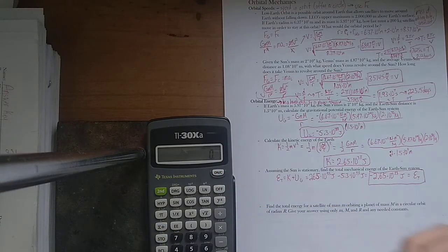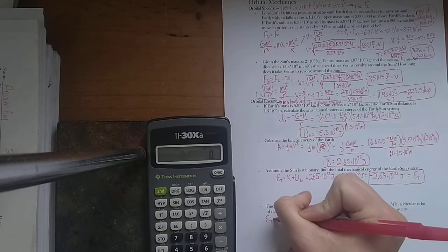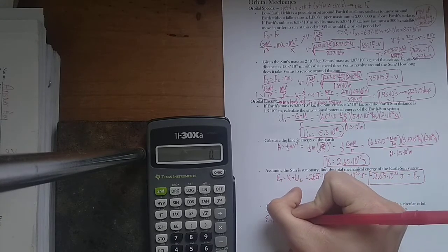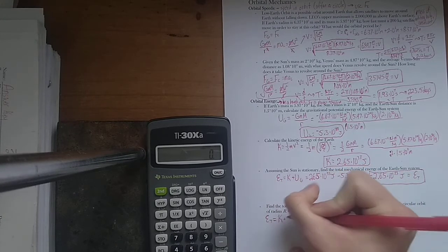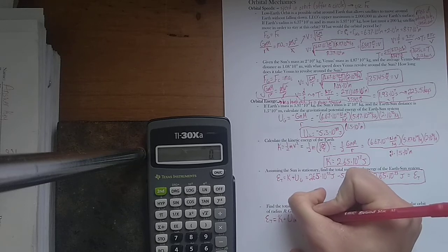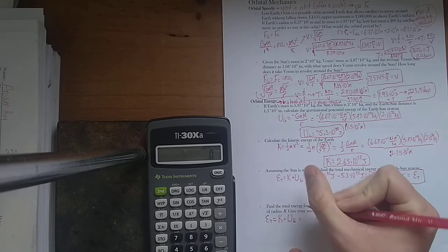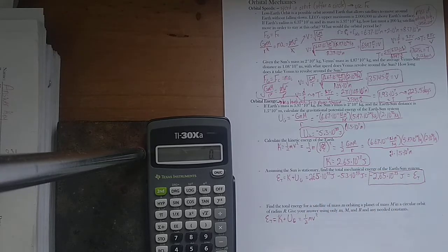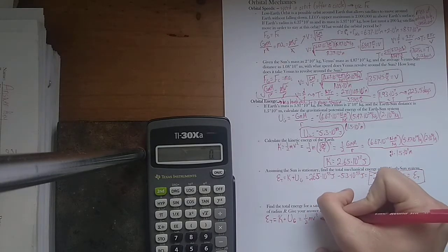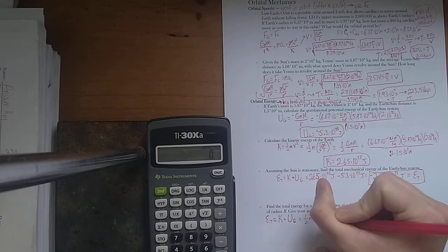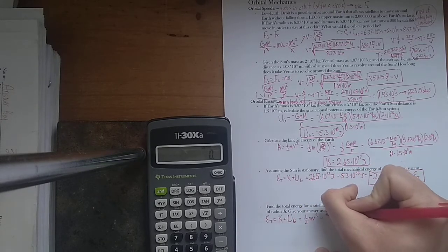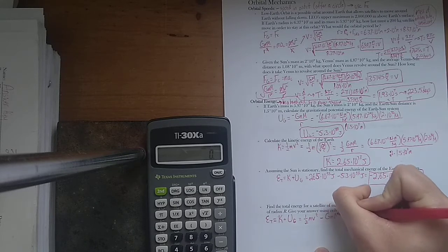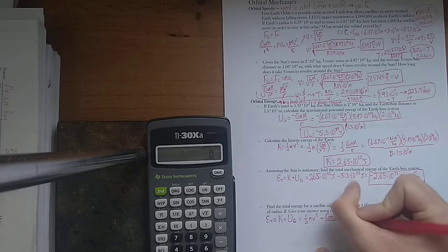So, we're looking for the total energy. We're going to start this off just like we did last time. That's going to be equal to K plus UG. But now I'm going to write it all symbolically. I know kinetic energy is one-half mv squared, where m is the little m, it's the mass of the satellite, minus the equation for gravitational potential energy is G little m, big M, over R.